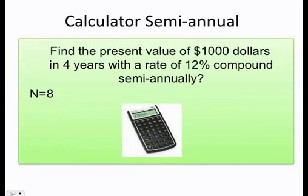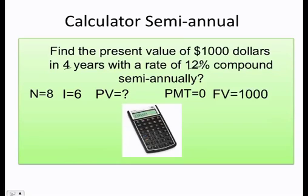With a calculator, N equals 8, remember that comes from 4 times 2, the rate is going to be 6, that comes from 12 divided by 2, payment 0, future value 1,000, and finally you get your present value.